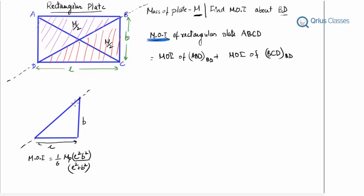And for a right-angled triangular plate, we have a formula. If the lengths are L and B, the moment of inertia of such a triangular plate about its hypotenuse can be written as 1/6 times the mass of the plate times L²B²/(L² + B²). How did we get this?